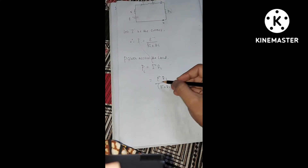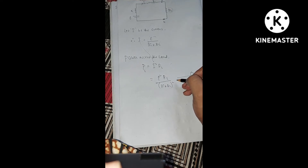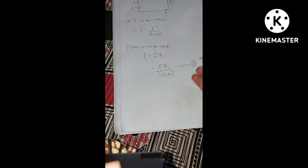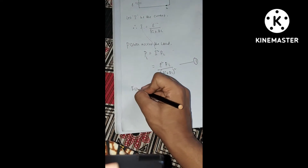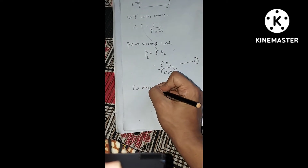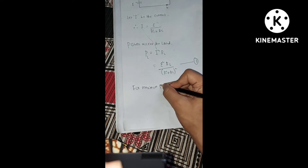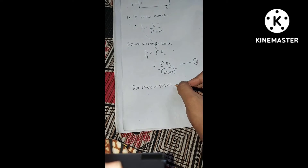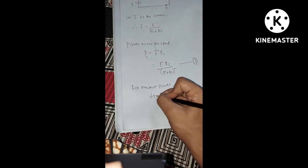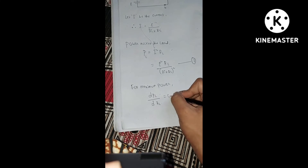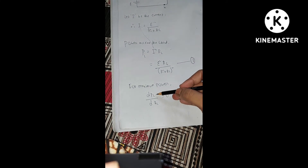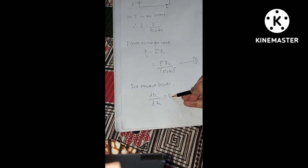The condition for maximum power to be delivered is: dPL / dRL = 0. That is, the derivative of load power with respect to load resistance should be equal to zero.